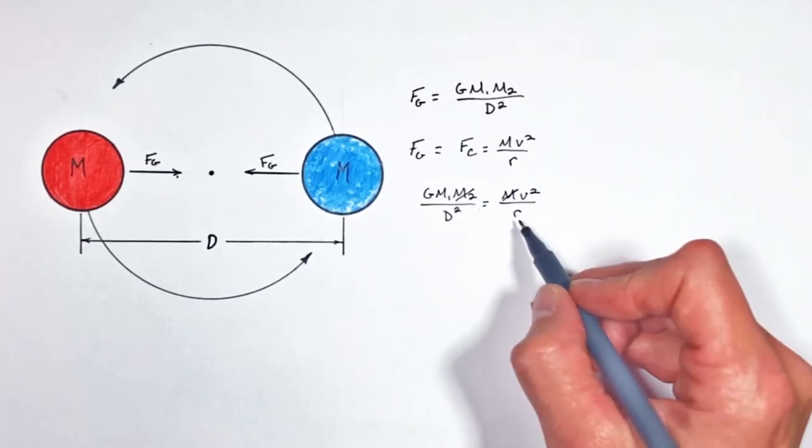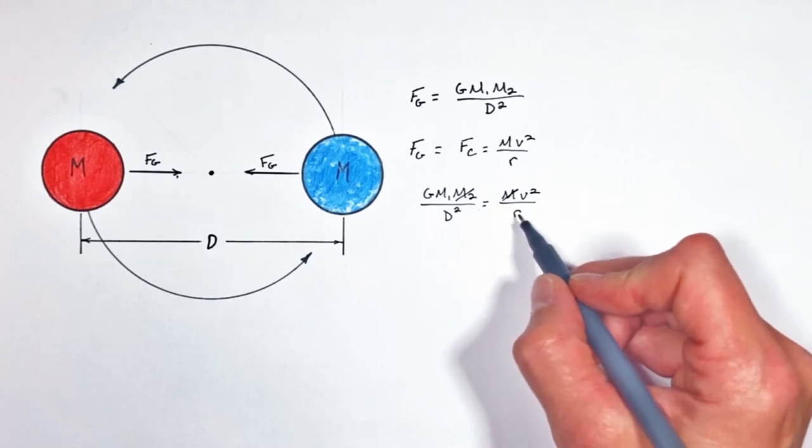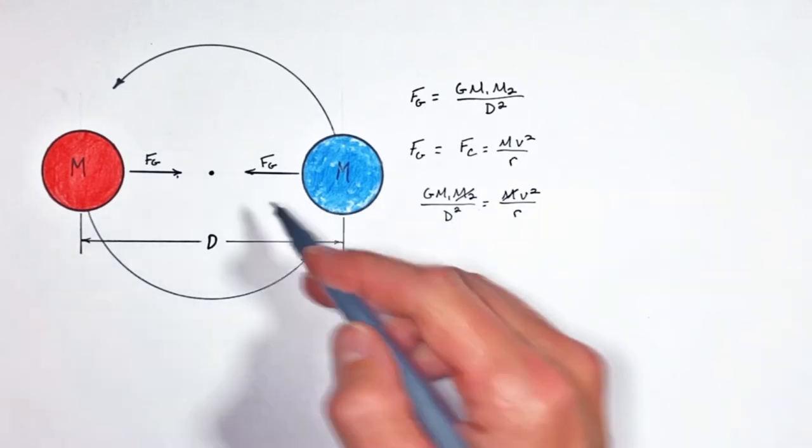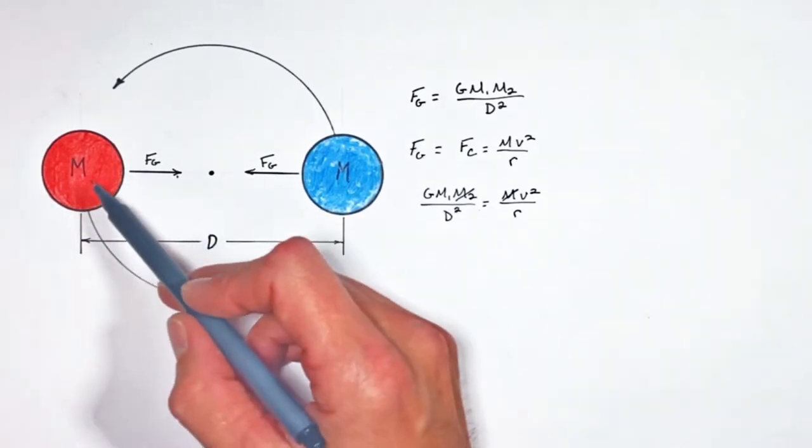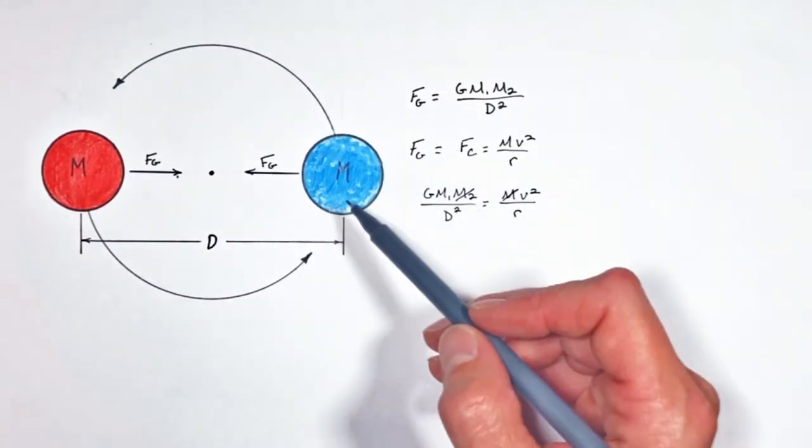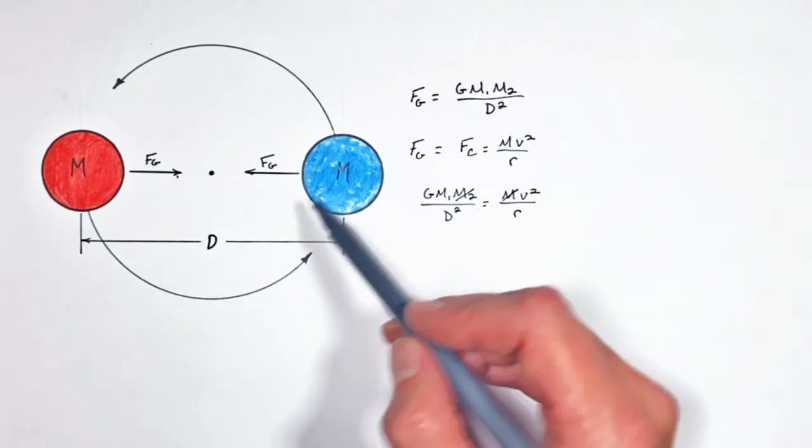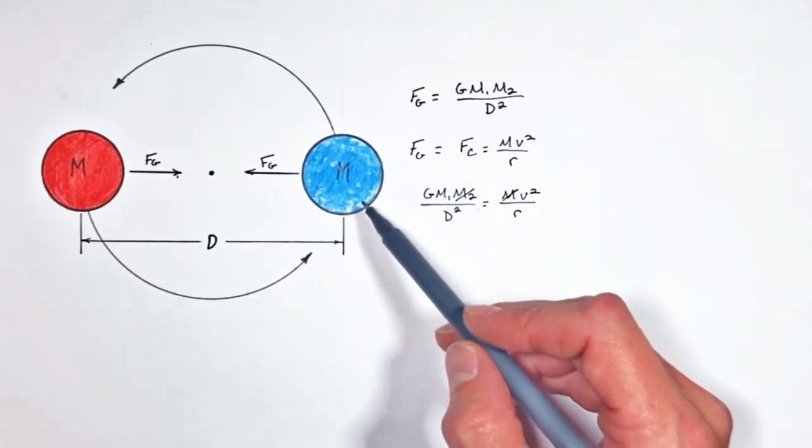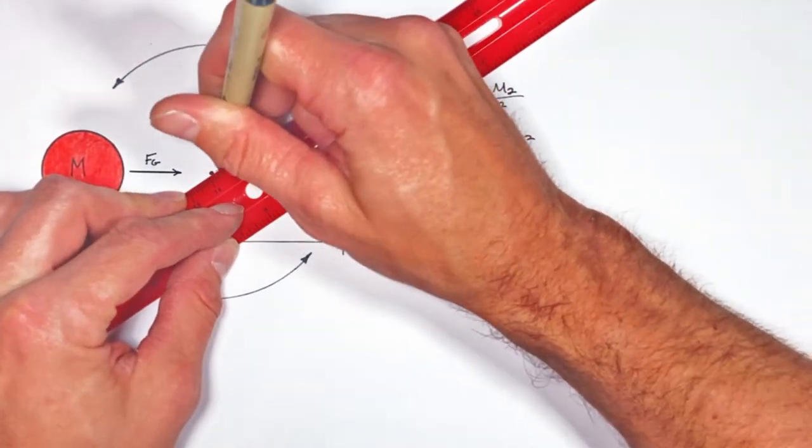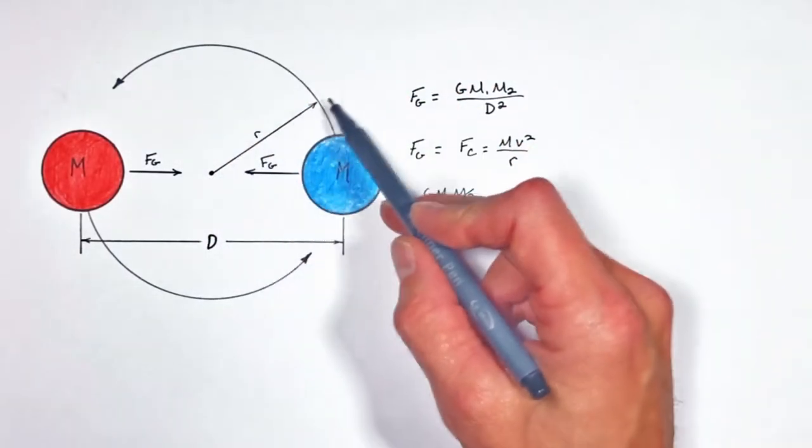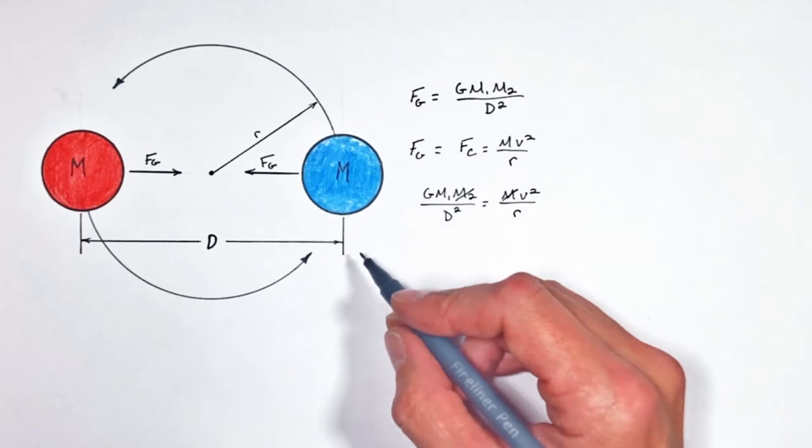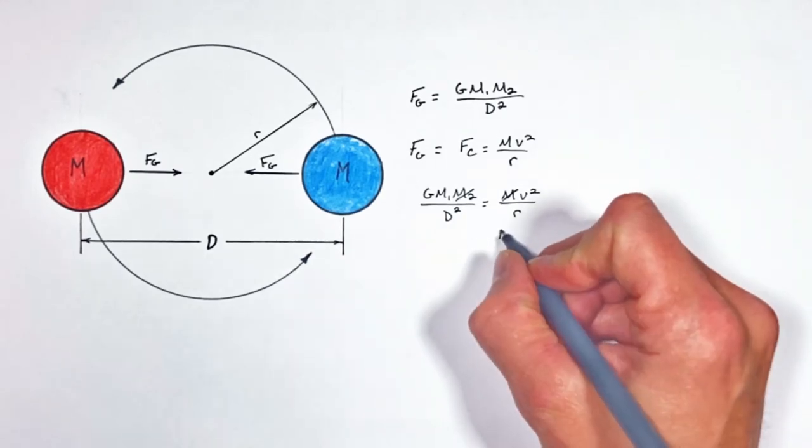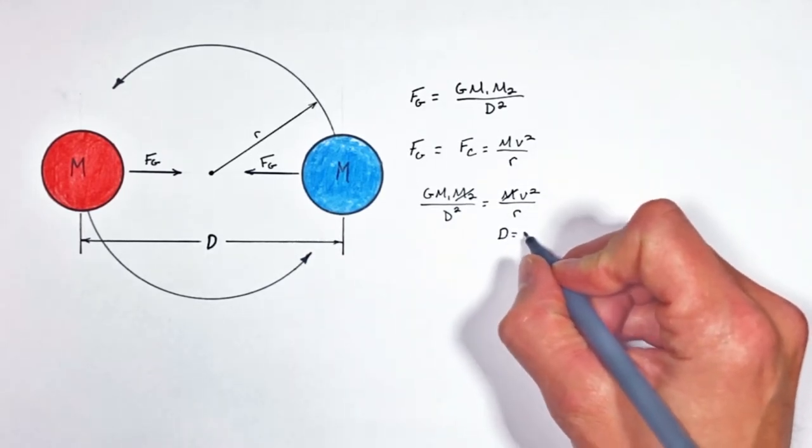But the trick in the problem has to do with this little radius r right here. You see, in a typical circular orbit the distance between the two objects d is the same as the radius of orbit. The issue is in this problem the distance between the two objects is not the same as the radius of orbit. The radius of orbit is going to be half of the distance between the two objects, or you could say our dimension d is equal to 2r.